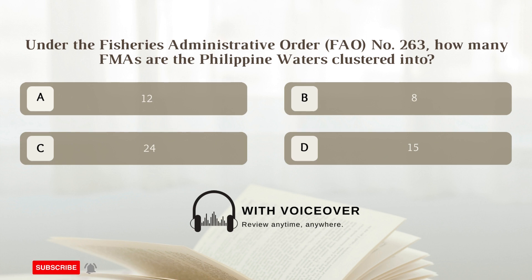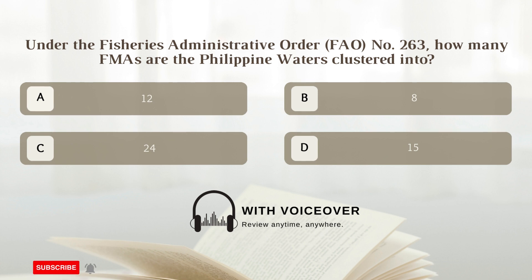Under the Fisheries Administrative Order (FAO) No. 263, how many FMAs are the Philippine waters clustered into? A. 12; B. 8; C. 24; D. 15. Answer A. 12.